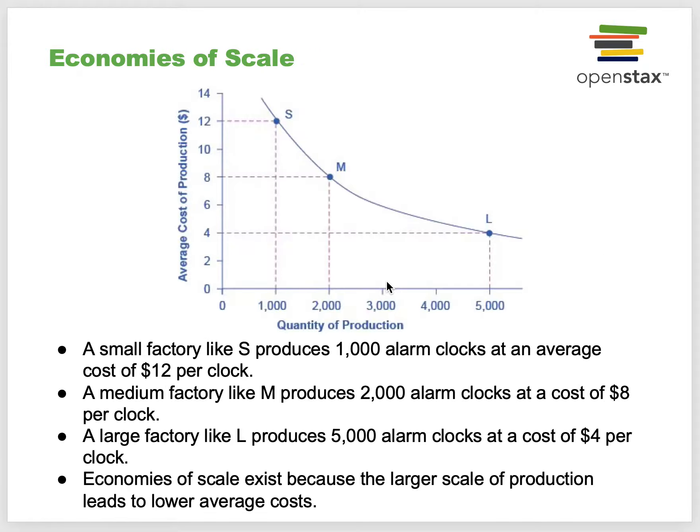A small factory produces 1,000 alarm clocks at an average of $12 per clock. A medium factory produces 2,000 alarm clocks at a cost of $8 each. A large factory produces 5,000 alarm clocks at a cost of $4 a clock. Economies of scale exist because larger-scale production leads to lower average costs.